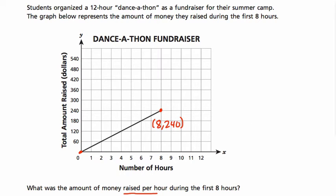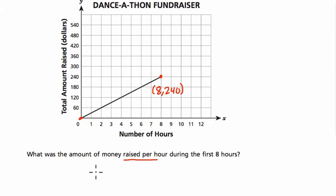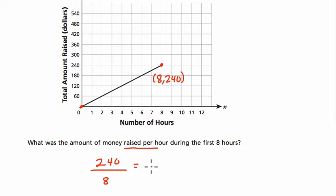So to figure out the rate per hour, I'm just going to take the total amount of money, which is $240, and divide it by eight. This gets me $30. It's $30 per hour.